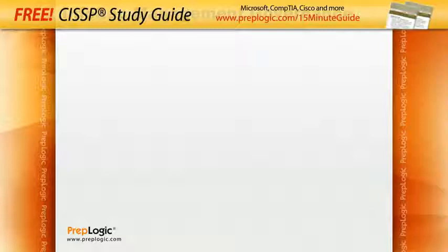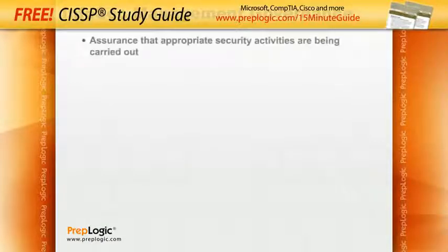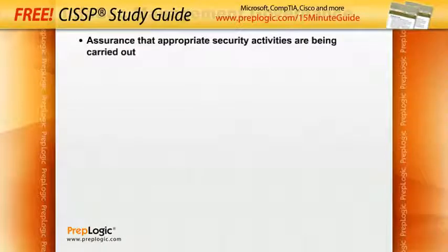One term you're going to hear quite a bit is information security management governance. It's a fairly new term, but it describes a large body of activities that have been around for quite a long time. Essentially, it is the assurance that appropriate security activities are being carried out — in other words, it's just the proof that you're doing what you need to be doing.